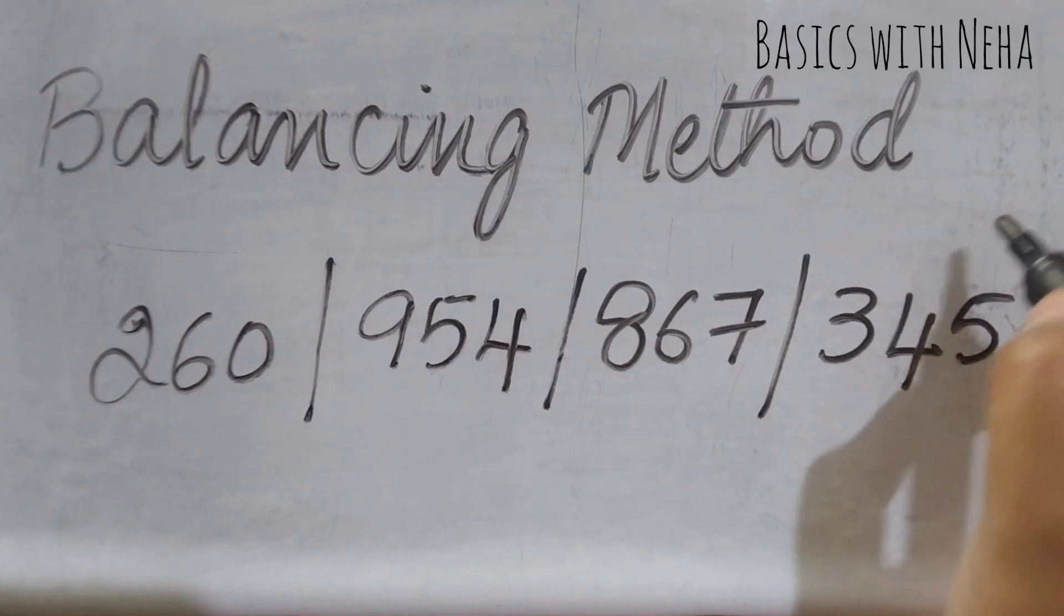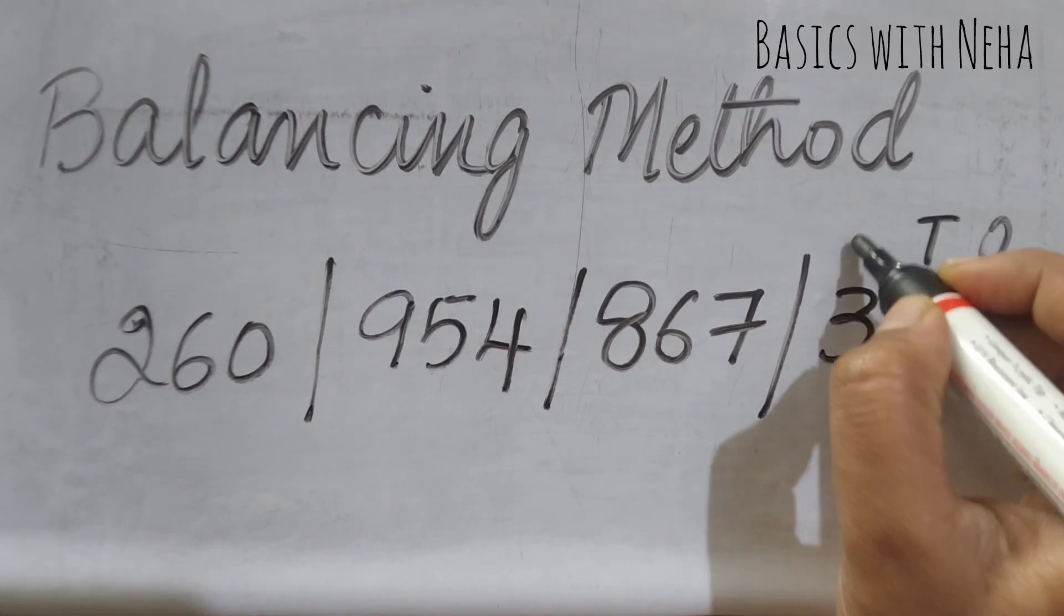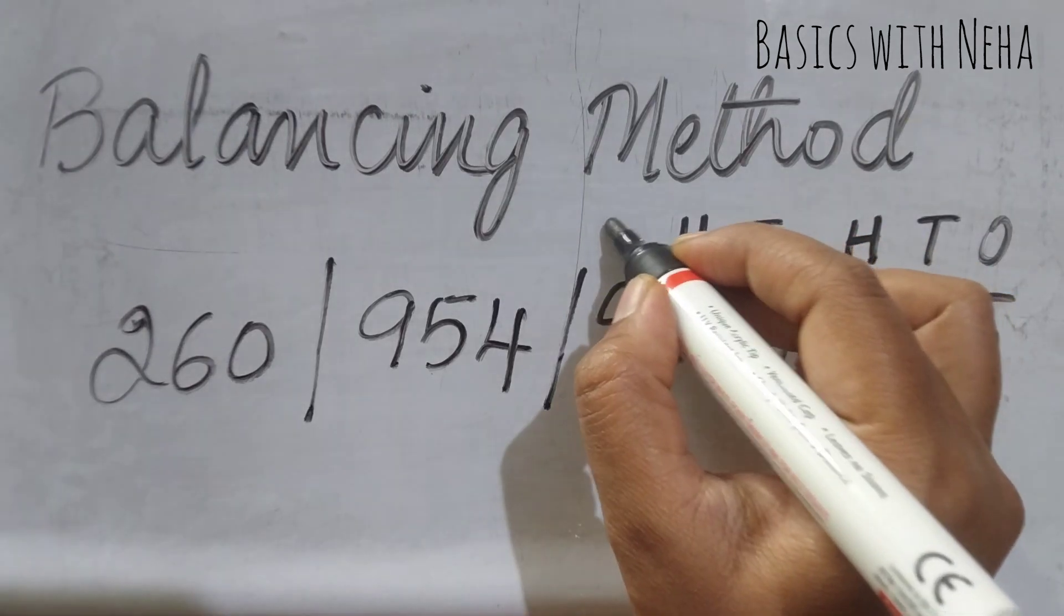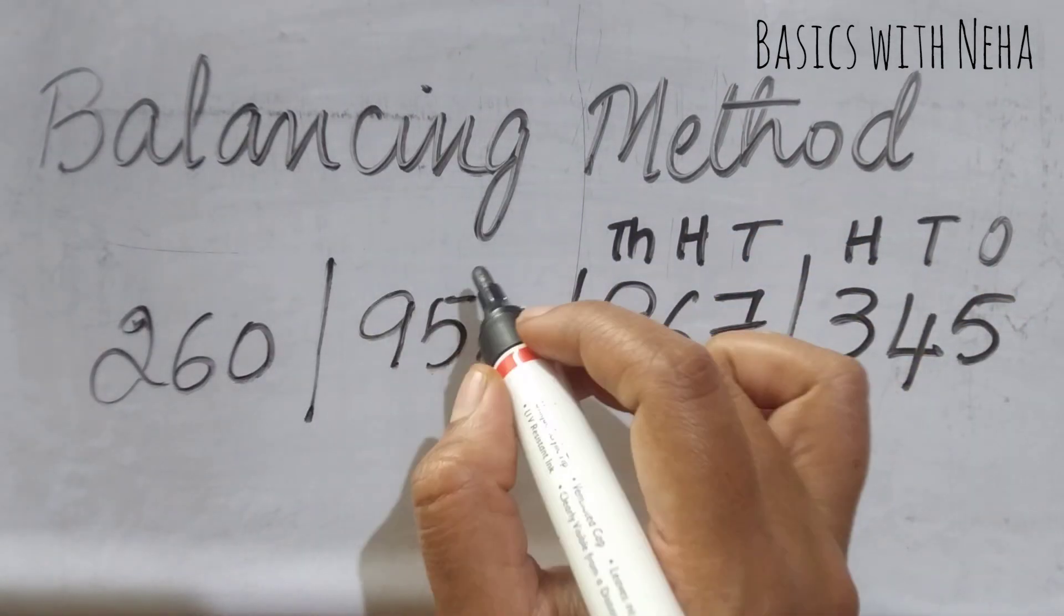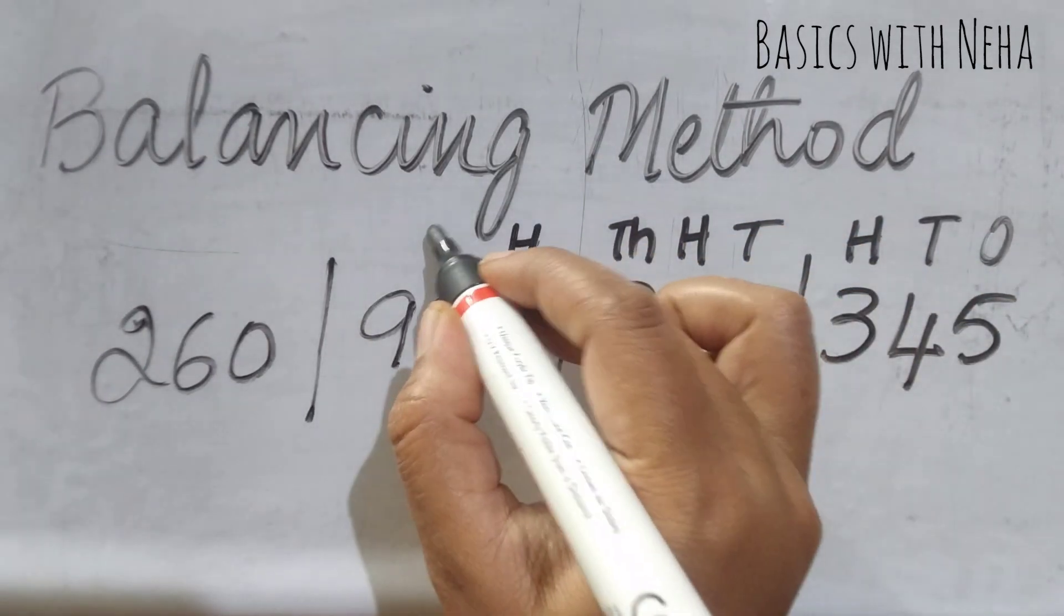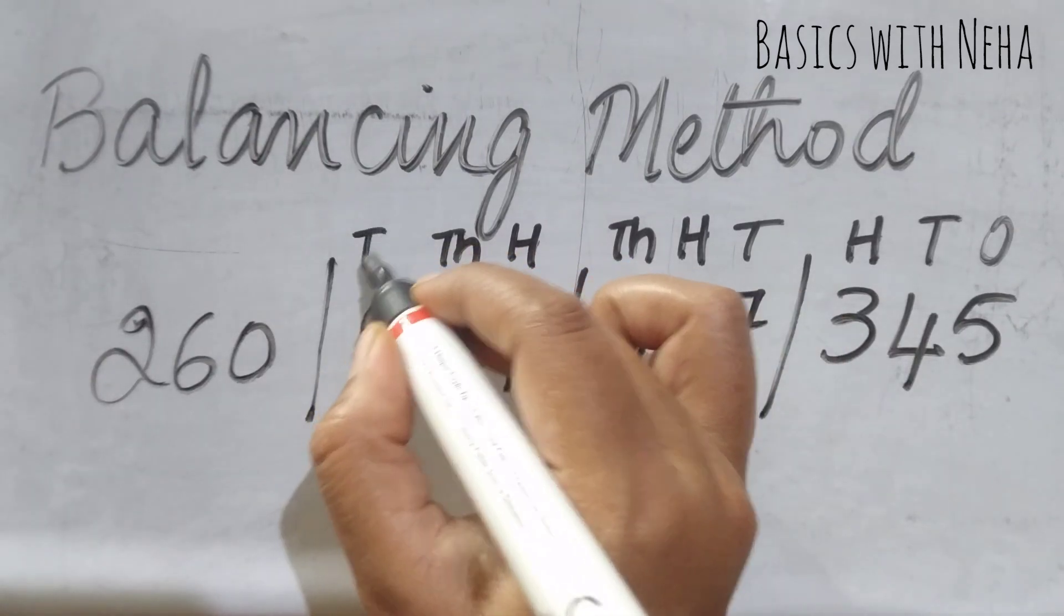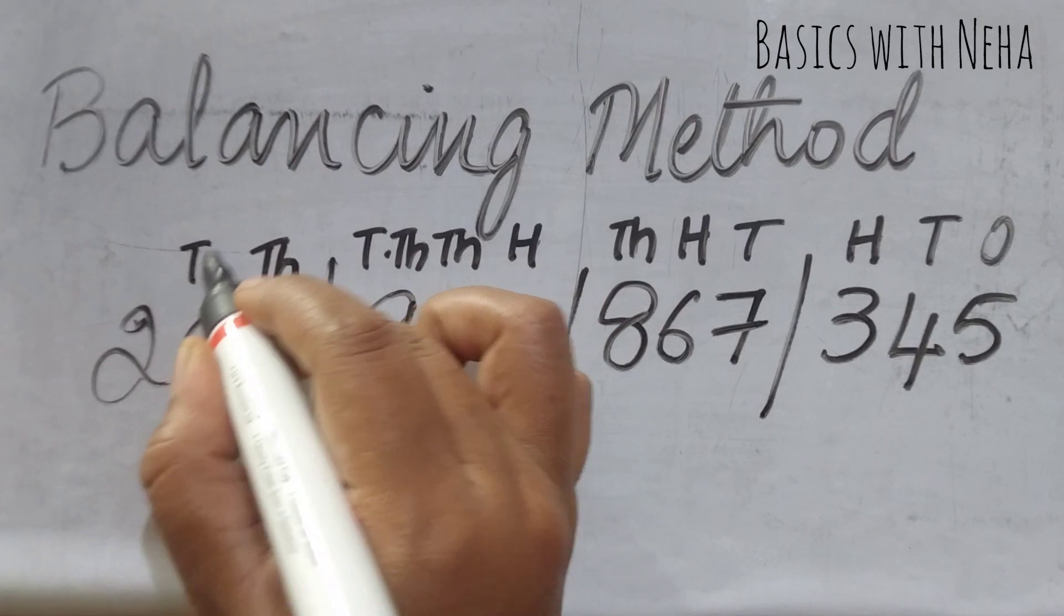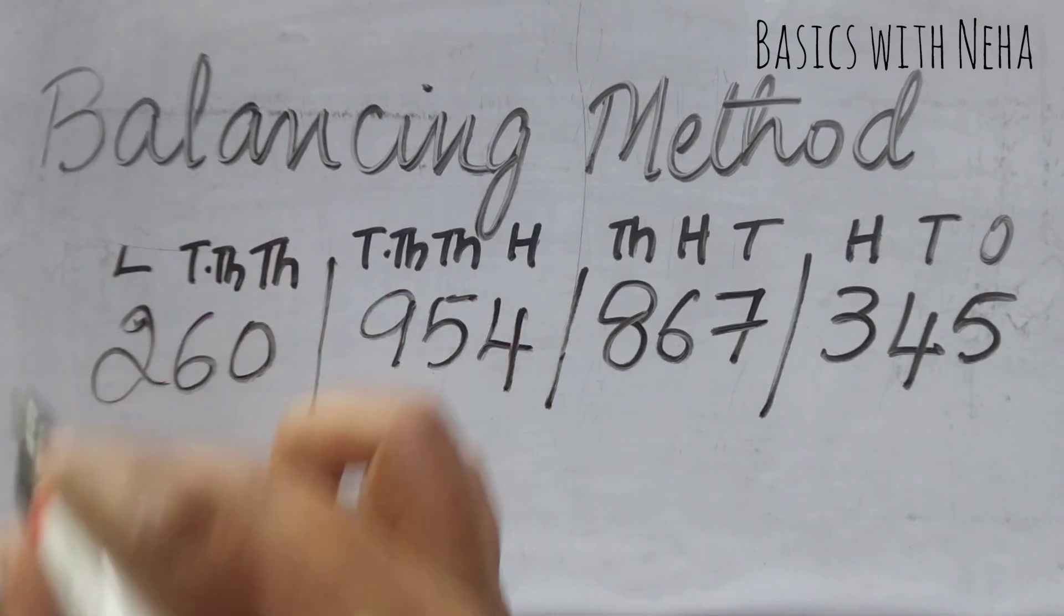This ideally means this is ones place, tens place, hundreds place. This is tens place, hundreds place, thousands place. This is hundreds place, thousands place, ten thousands place. This is thousands place, ten thousands place, and lakh place.